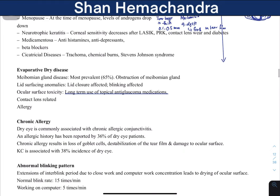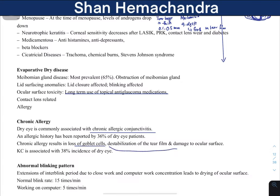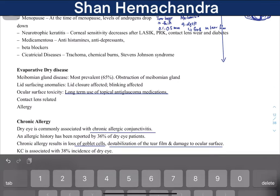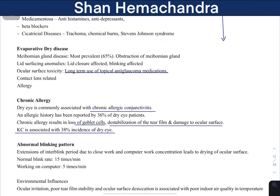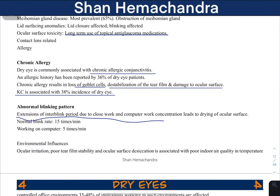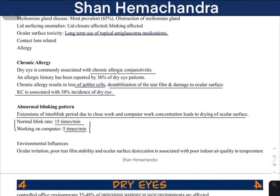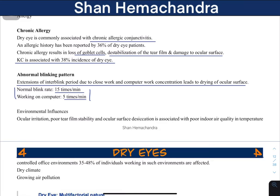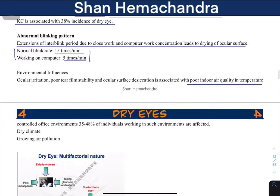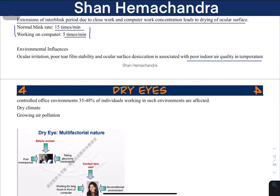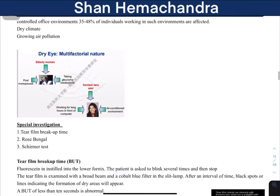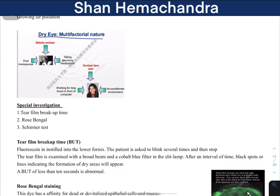Chronic allergic conjunctivitis can lead to loss of goblet cells, which produce mucin. This destabilizes the tear film and damages the ocular surface because the cornea cannot hold tears properly — it is a common cause of dry eye. An abnormal blinking pattern is mainly due to prolonged computer use, as the rate of blinking is significantly reduced when working on electronic devices. Environmental influences such as poor air quality or low-humidity air-conditioned environments also contribute. Remember, dry eye is usually caused by multiple factors simultaneously.